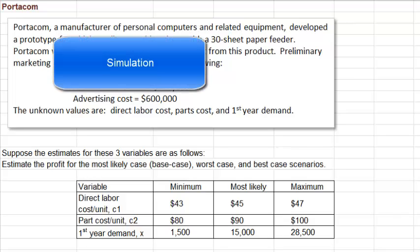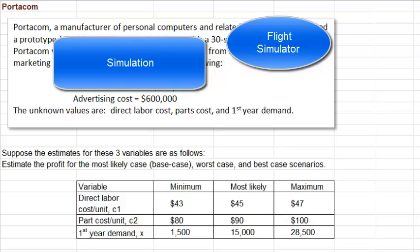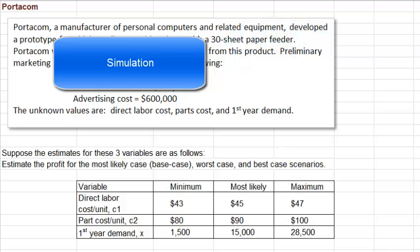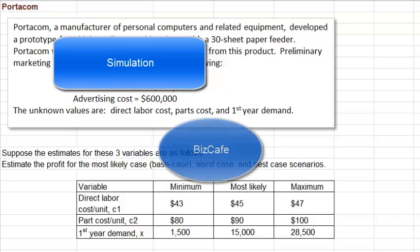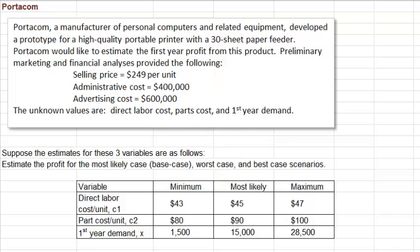Simulation is the most popular quantitative method in business, second only to statistics. You may have heard of different kinds of simulations. There are simulations used for training, like flight simulators for training pilots, or business simulation games you might have played in your classes — for instance, in Business 150, you might have played a simulation game called Biz Cafe, where teams of students pretend they're running a coffee shop and make weekly decisions. We use simulations in making real business decisions too.